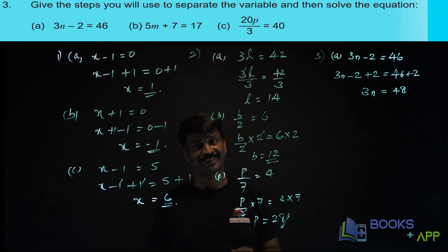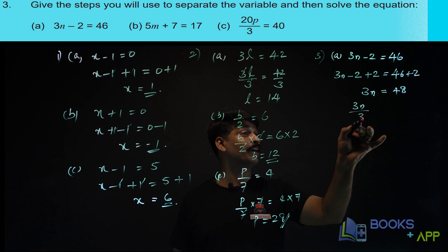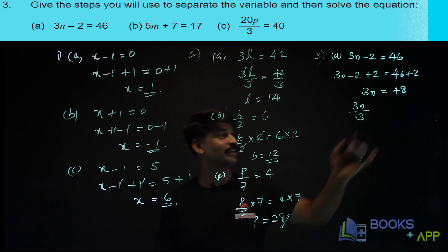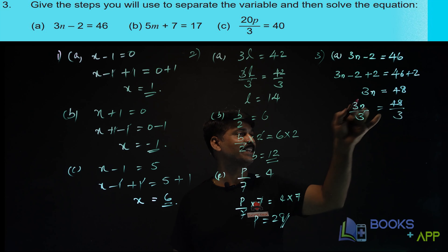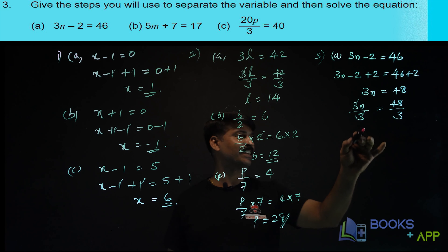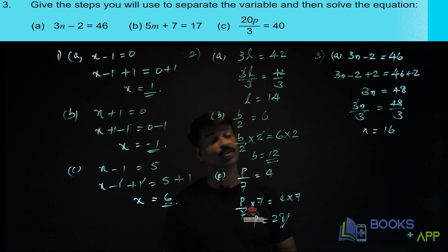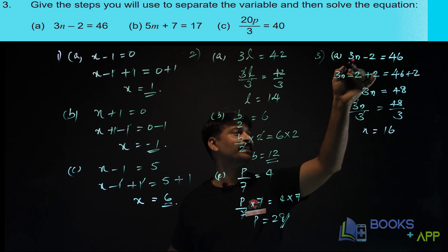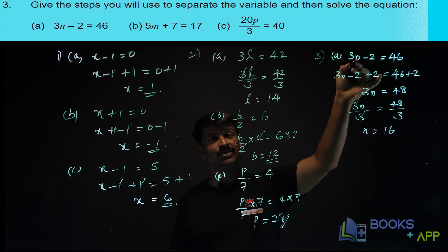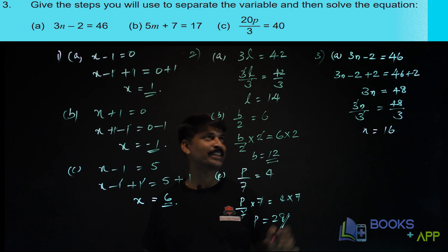Again 3 is there — we have to remove the 3. So what do we have to do? You have to divide 3n by 3, and on RHS also divide by 3. So 3 and 3 get cancelled. n is equal to 48 by 3, that is 16. You put the value of n here: 3 into 16 is 48, and 48 minus 2 is 46. So the answer is right.